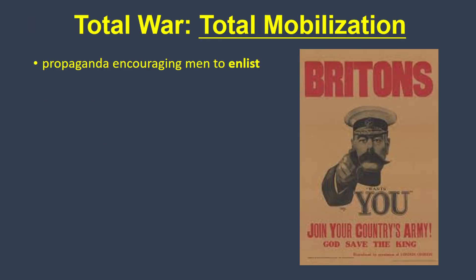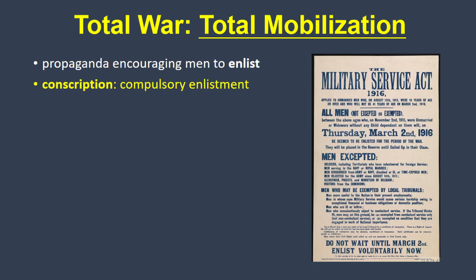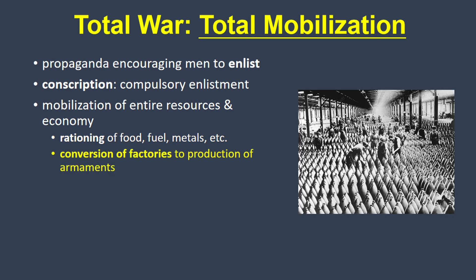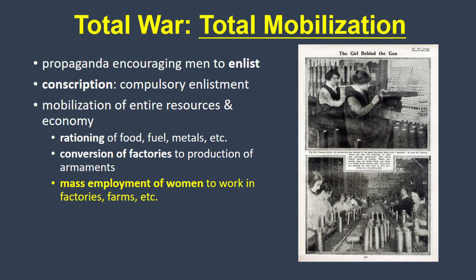Third is total mobilization. In addition to nationalist propaganda encouraging men to enlist, there was also the practice of conscription, compelling them to join whether they wanted to or not. Total war wasn't just about mobilizing soldiers, but also about mobilizing the entire population and resources of the economy for the war effort. Governments enforced rationing of all kinds of resources, such as food, fuel, textiles, and metals. Factories needed to be converted to produce artillery shells and other military supplies, just at the time when all the men were being sent to the front. So it was often women who took the jobs in the factories, making weapons or uniforms, or working on farms, or many other types of work.